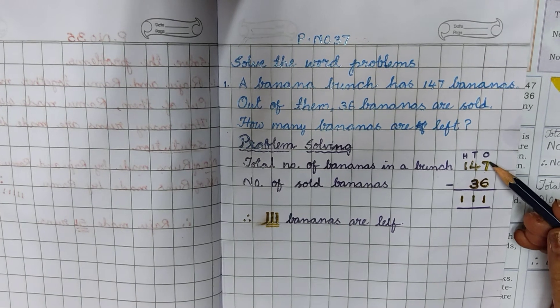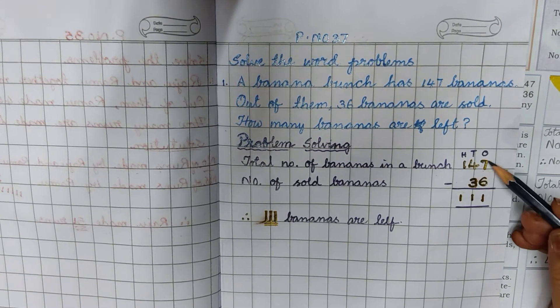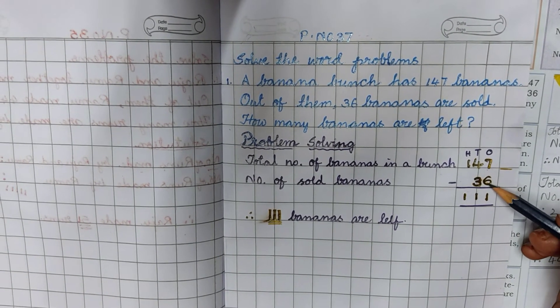See here. First subtract the numbers which are in 1's place. 7 minus 6, 1.